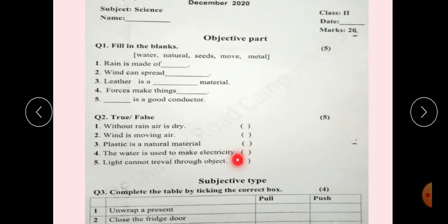So let's start. Your assessment is 20 marks with 2 parts: First, Objective and Second, Subjective.